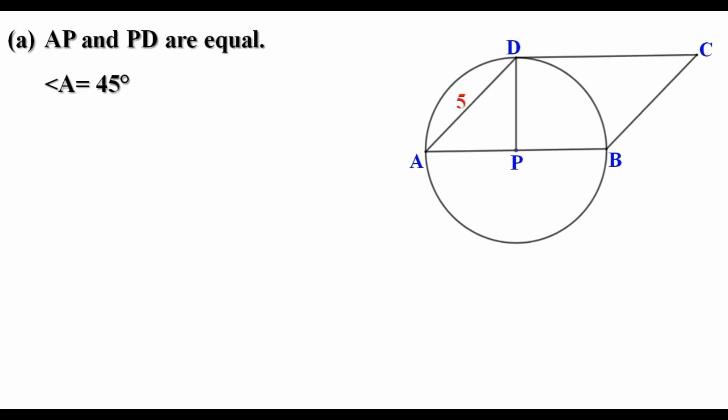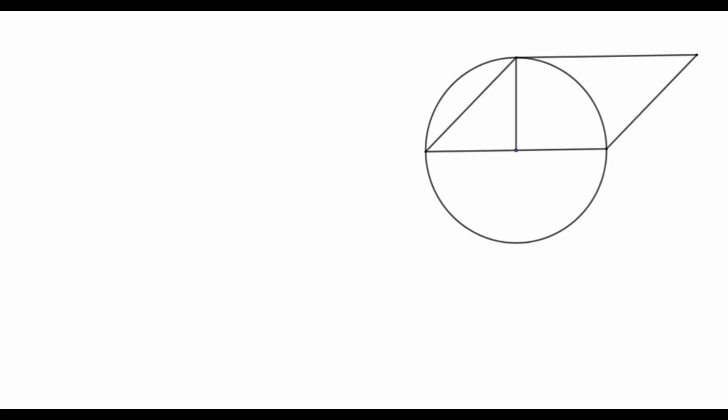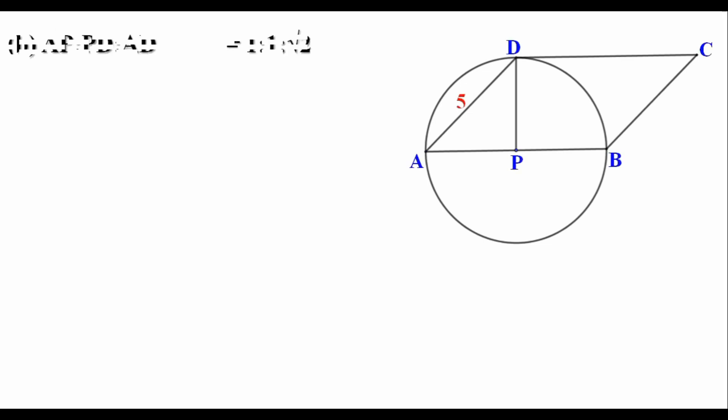Now we have to find the area of triangle APB. For that we need to find AP and PD. Both AP and PD are equal. It is an isosceles right angle triangle. So the ratio of the sides is 1 is to 1 is to root 2. That is AP is to PD is to AD equal to 1 is to 1 is to root 2.